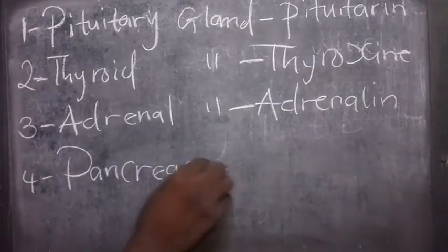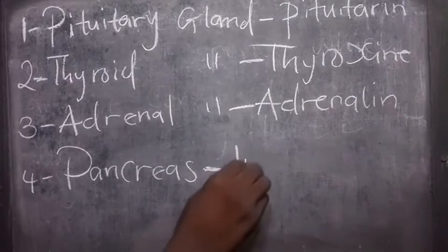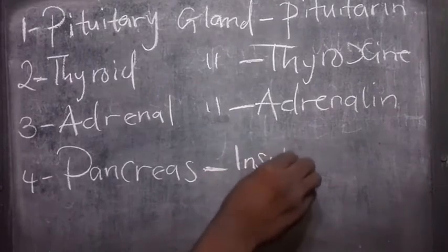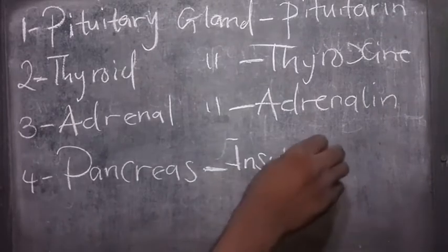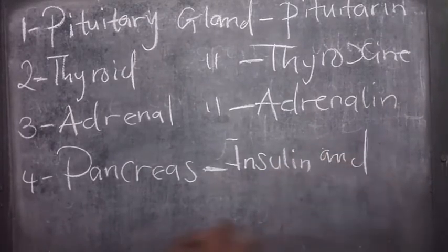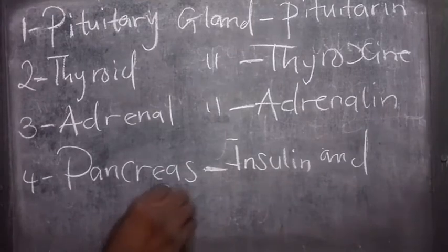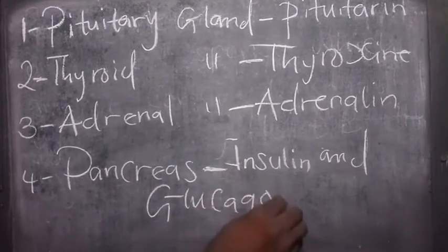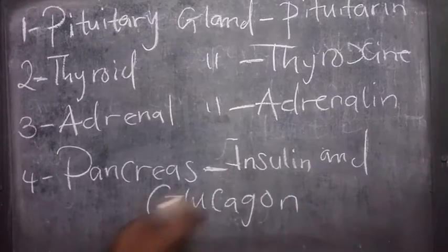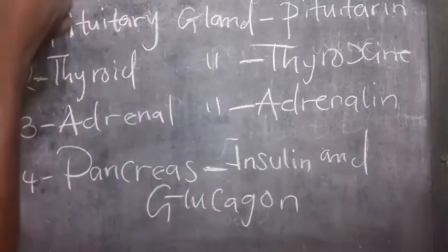Pancreas produces insulin and glucagon. So those are the hormones that they secrete and those are the glands.